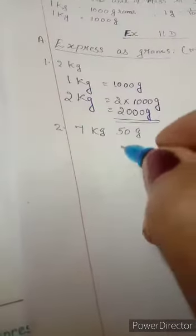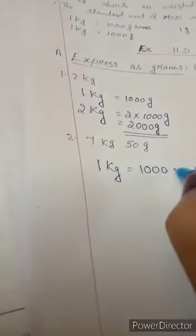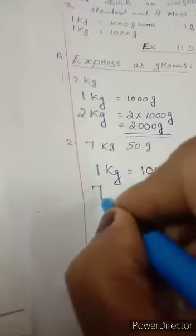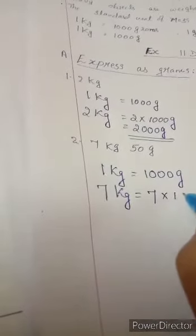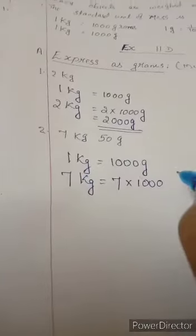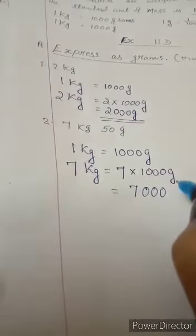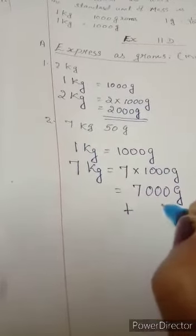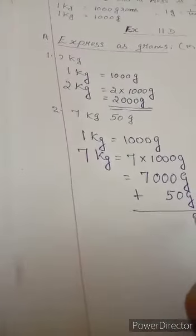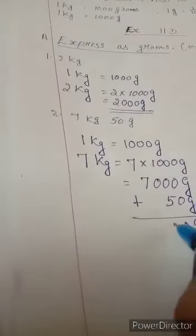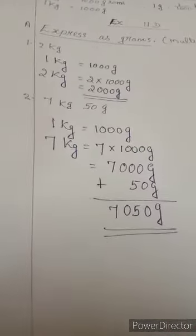Now second question, 7 kg 50 gram. Here also first you will write 1 kg is equal to 1000 grams. 7 kg is equal to 7 into 1000. You will multiply this 7 by 1000, so your answer is 7000 grams. Now you will add 50 gram with it. You write the unit first. 0 plus 0, 0. 5 here, 0 here and 7. Now your answer is 7050 grams.